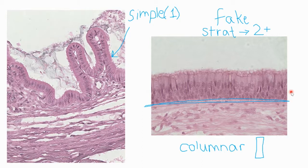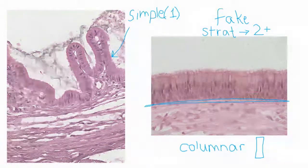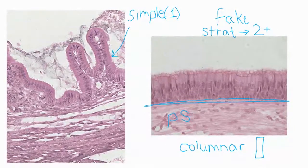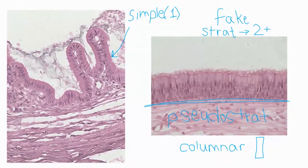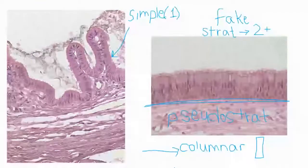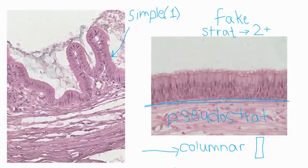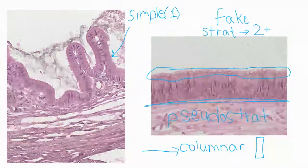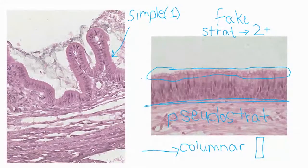This is called pseudo-stratified columnar. The other thing we have to talk about is what's going on at the top of those cells. When I look at the picture on the right, notice that on the top of these cells you see a bunch of things that look like eyelashes — like the eyelashes on your own eyes. These wavy eyelash structures at the top of my cells — what do I call those?